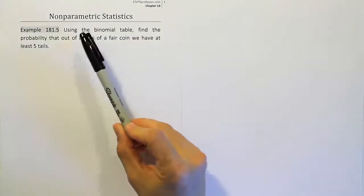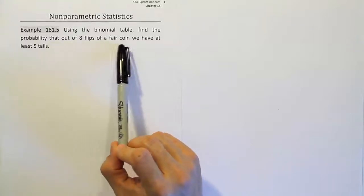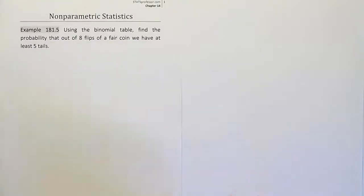Example 181.5. Use the binomial table. Find the probability that out of eight flips of a fair coin, we have at least five tails.